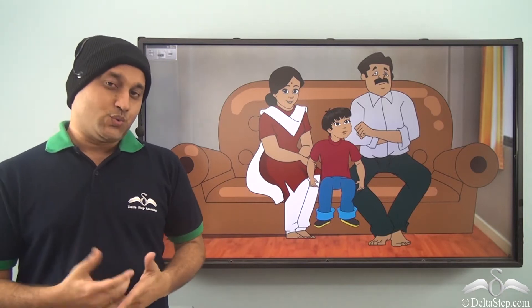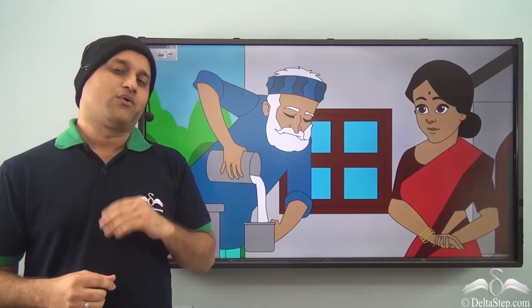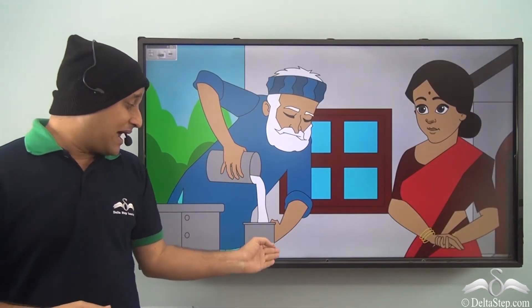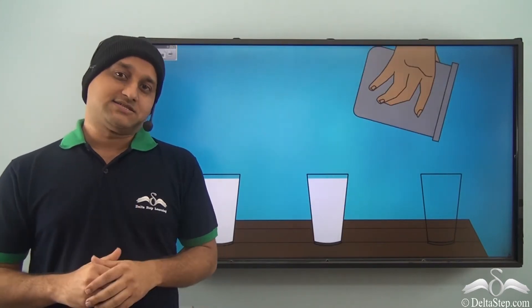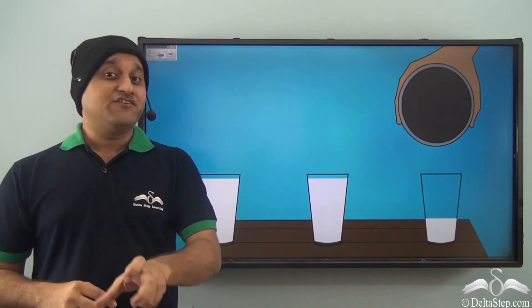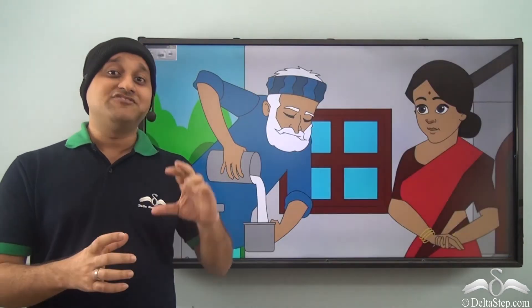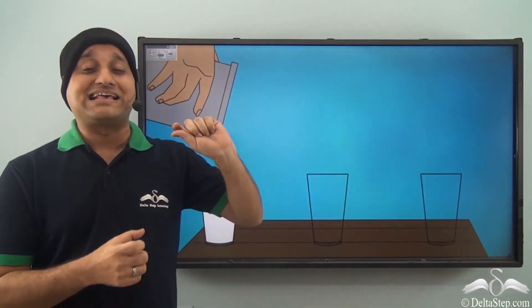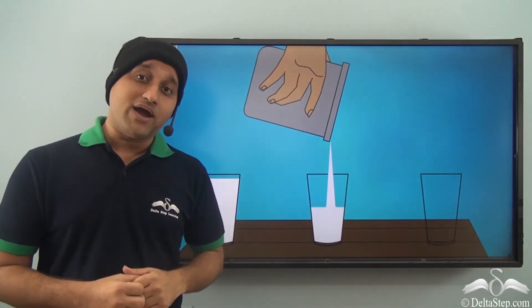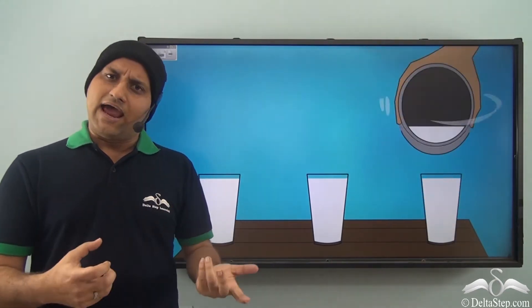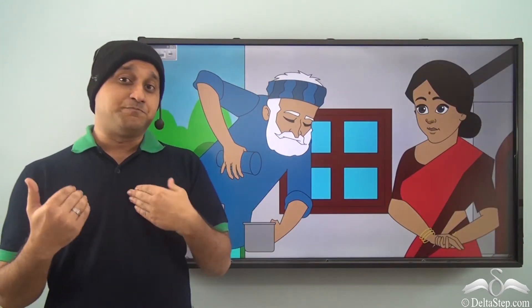So what exactly changed when they gave their own glass? Earlier the milkman was measuring the milk with estimation, so sometimes it was more and sometimes it was less. But when they gave their own glass, he was able to measure the exact quantity the family required — three glasses of milk — and it was an exact match, so the measurement was perfect.